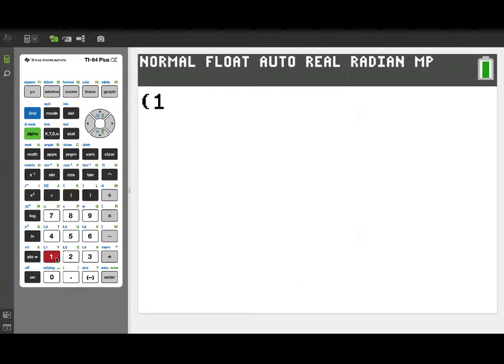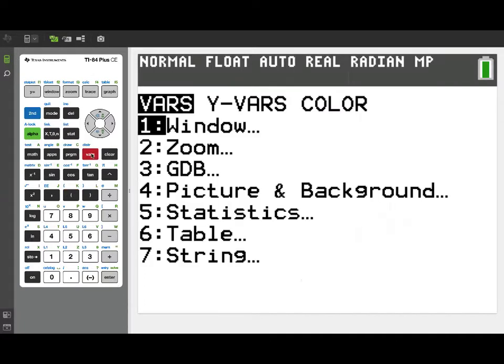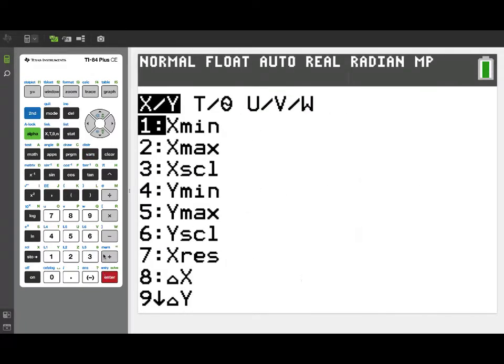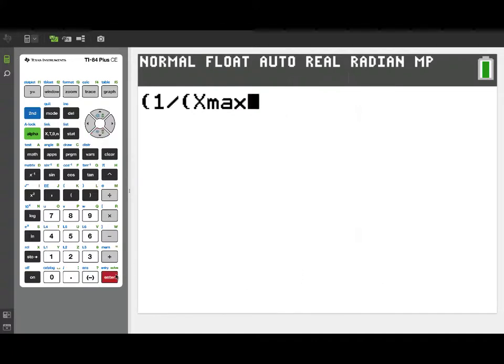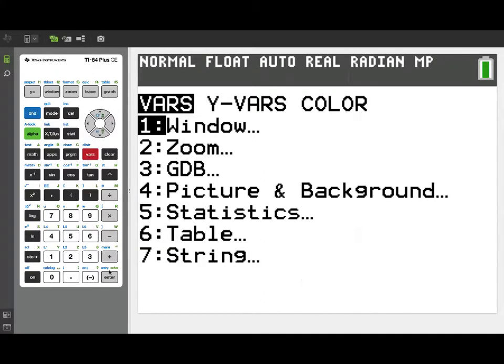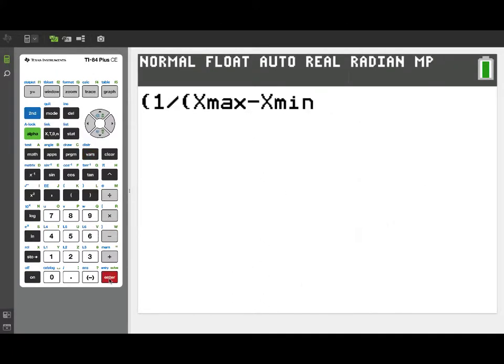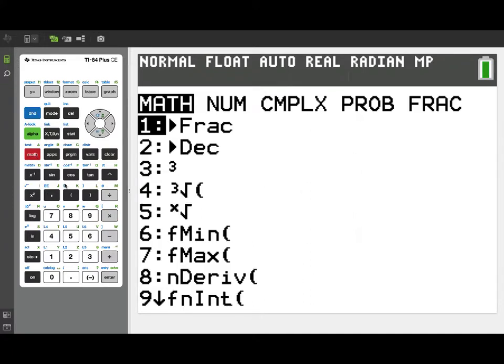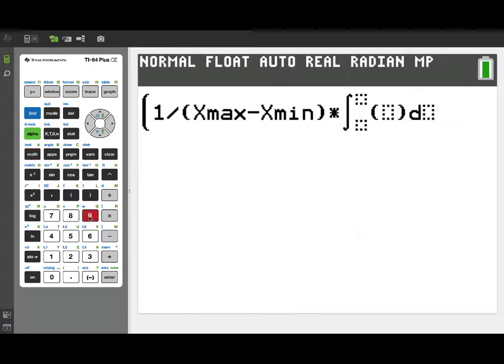So I'm going to multiply by 1 divided by my xmax minus xmin. Now I can find those variables under window in the vars menu. So there's xmax and then we'll subtract xmin. So I go back to the variables menu. There we go. And that's taking care of our division by the length of the interval. Now we're going to get our definite integral.